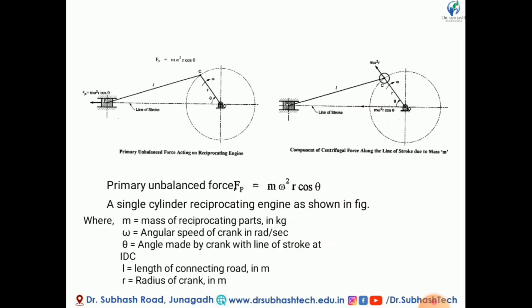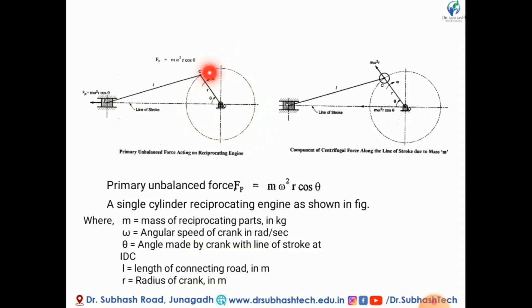Let us consider a single cylinder engine. This is a single cylinder engine; this is a line of stroke. OC is a crank, CP is the connecting rod, and PE is the piston or slider. We know that the crank makes an angle theta degrees with the inner dead center and rotates with omega angular speed in the clockwise direction. Because of this piston's acceleration, some inertia force is acting along the line of stroke. In a single cylinder engine, primary and secondary unbalanced forces act along the line of stroke.